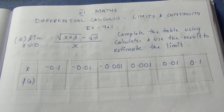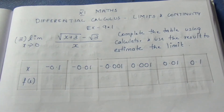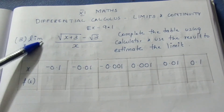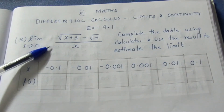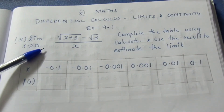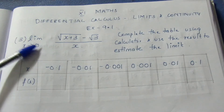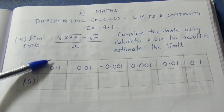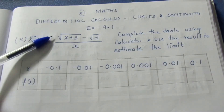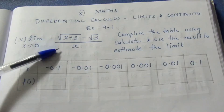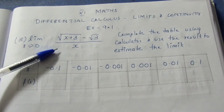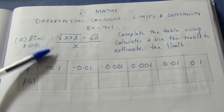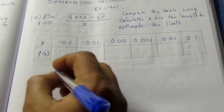For the first part, we will substitute the value directly. If we substitute x equals 0, it is impossible — we get 0 in the denominator, but not in the numerator. So we need a different approach to solve this sum.